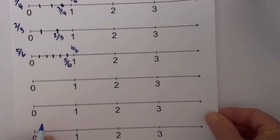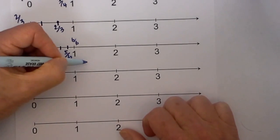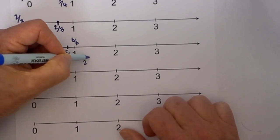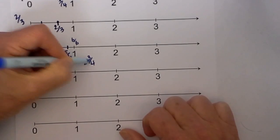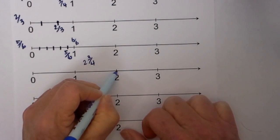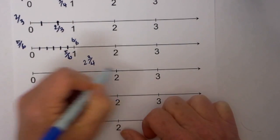How about if you have a mixed number, what do you do? Say we have 2 and 3 fourths. Well we go to 2 and then we just plot the fraction.